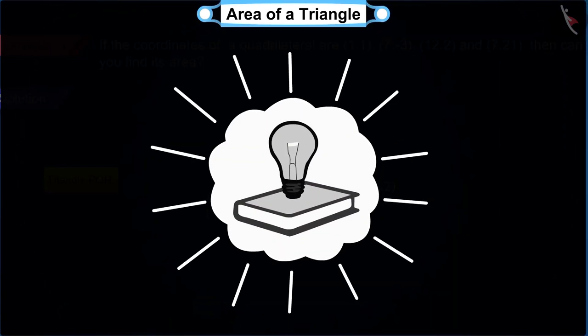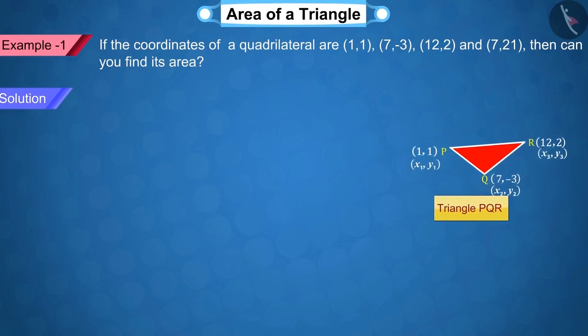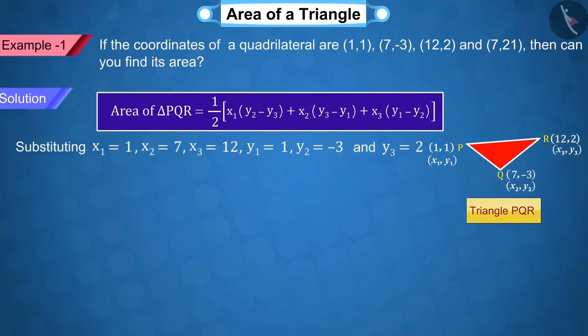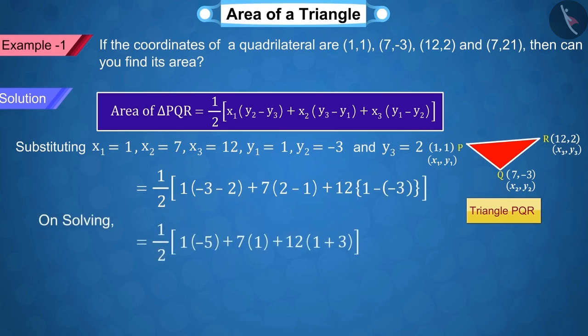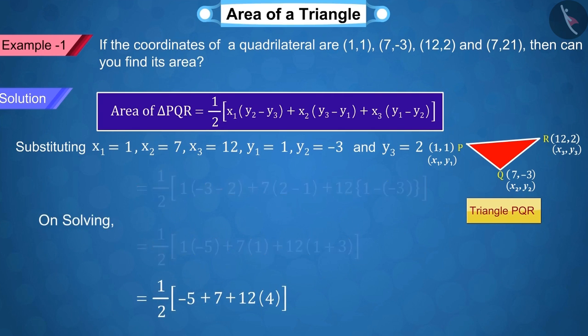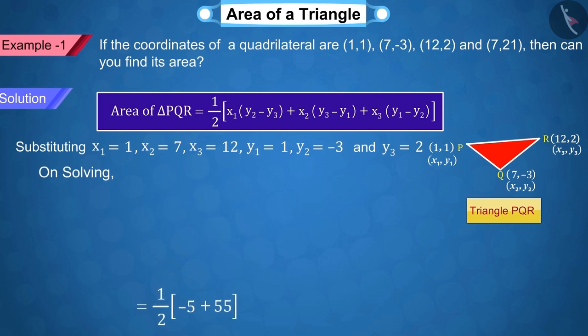Recall and state, how did we find the area of a triangle in such situation? In this formula, we can substitute the values of x₁, y₁, x₂, y₂, x₃ and y₃ and solve. From which, we get the area of triangle PQR as 25 square units.